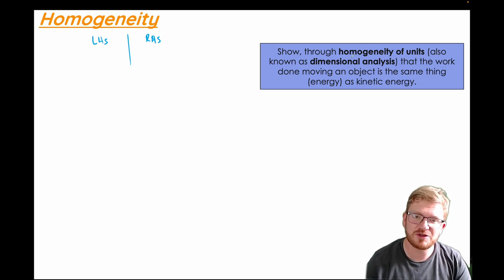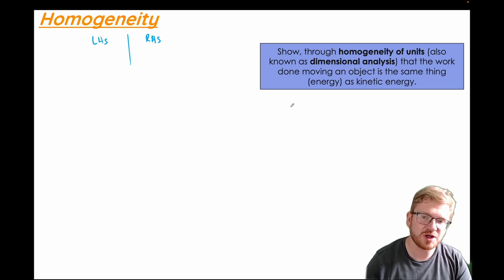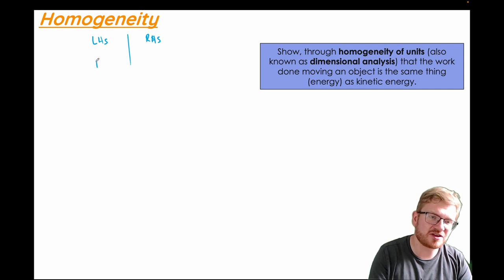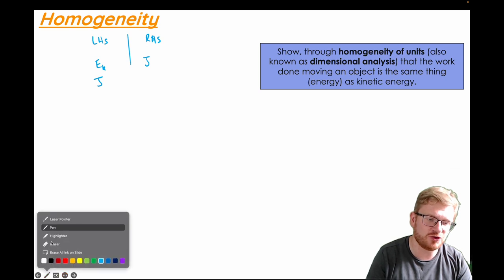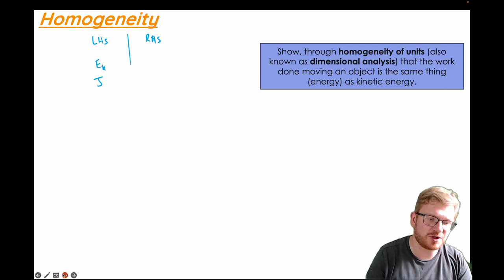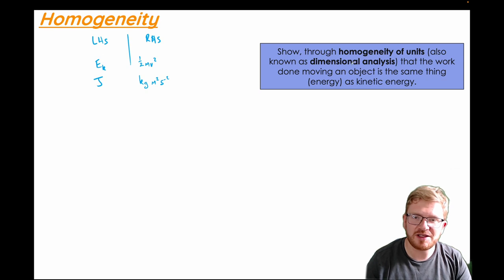This is the sort of thing you might be asked to do at A-level: show through homogeneity of units — also known as dimensional analysis — that the work done moving an object is the same type of energy as kinetic energy. Kinetic energy can be measured in joules, and the usual equation is KE = ½mv². On the previous slide, I worked out that this is kilogram metres squared per second squared.